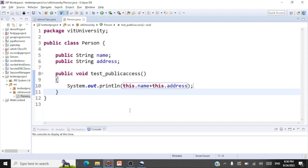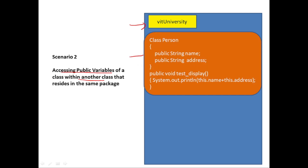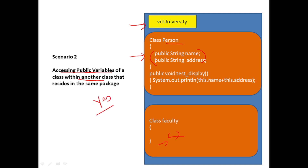Now let's go to scenario two: accessing public variables of a class within another class that resides in the same package. So you have this VIT University package with the class Person. Now the question is — we have another class Faculty with some methods — can we access the public data members of the class Person within the methods of the class Faculty? The answer is yes. If you declare something to be public, you can access it within the class and also outside the class in another class. Here both classes are within the same package.